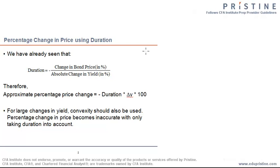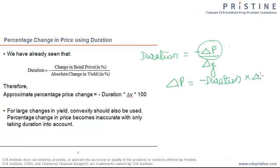We've already seen that duration is basically defined as the negative of the change in price for a change in yield. If we rearrange this equation, you get delta P equals negative of the duration times delta Y. So the change in price of a bond is equal to the duration times the change in yields with a negative sign.